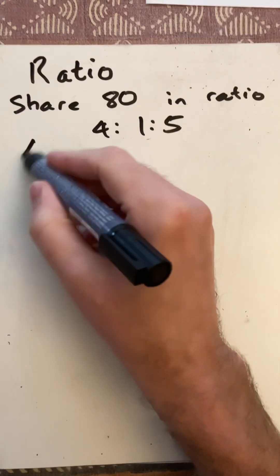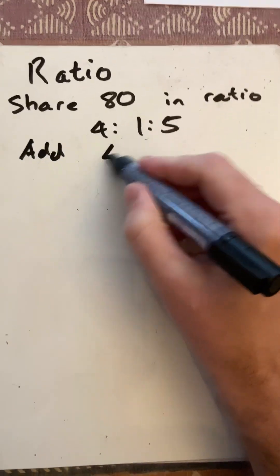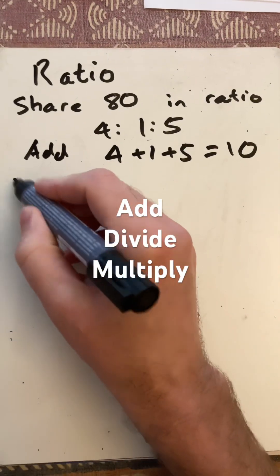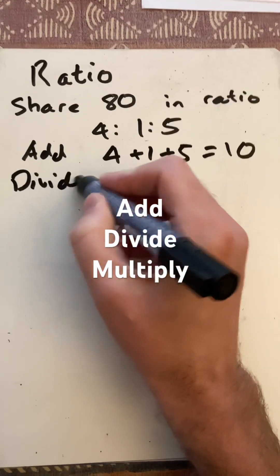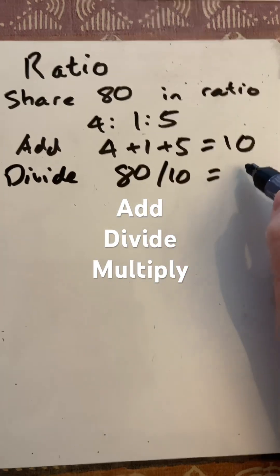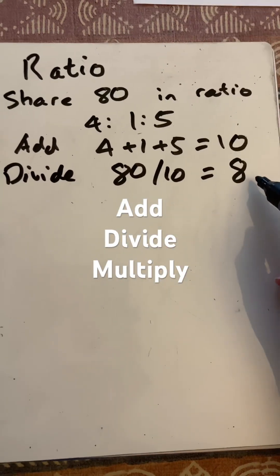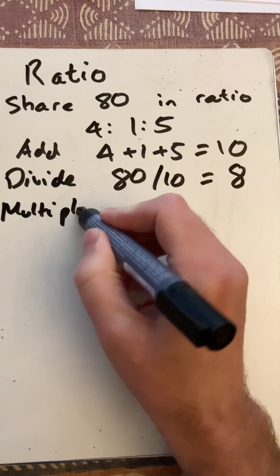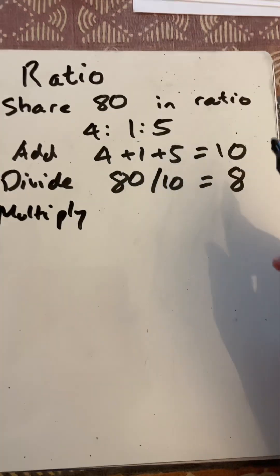First, add up all the parts. 4 plus 1 plus 5 is 10. Then divide the total by the number of parts to find how much one part is worth. Then multiply each of the 4, 1, and 5 by 8.